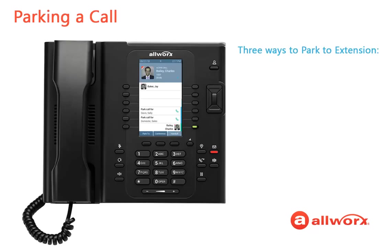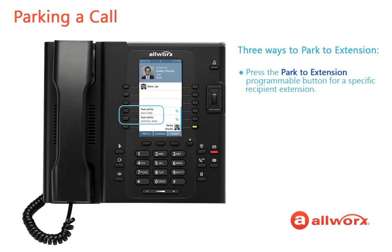The Verge phone offers up to three ways to park an active or held call to a specific recipient extension. The easiest way is to press the Park to Extension programmable button, which is assigned to a specific recipient extension. Only the AllWorks server administrator can assign and configure these programmable buttons. The Verge phone screen updates the call status to Call Parked, the programmable button label changes dynamically and includes a Parked Calls icon, and the programmable button LED lights solid red.